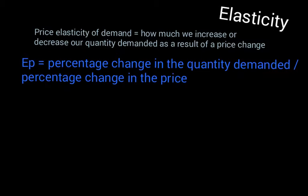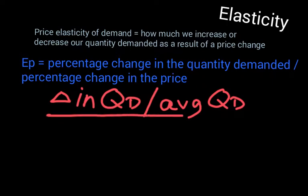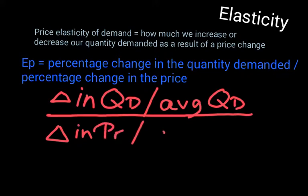The official formula for price elasticity of demand is the percentage change in the quantity demanded divided by the percentage change in the price of the product. In economics, we use the midpoint method for percentage change — that's the change in quantity demanded (delta Qd) divided by the average of the two quantities demanded, then divide that by the change in price (delta P) divided by the average price.